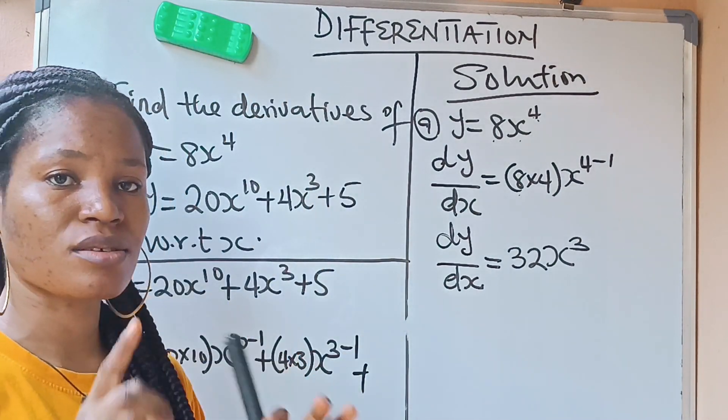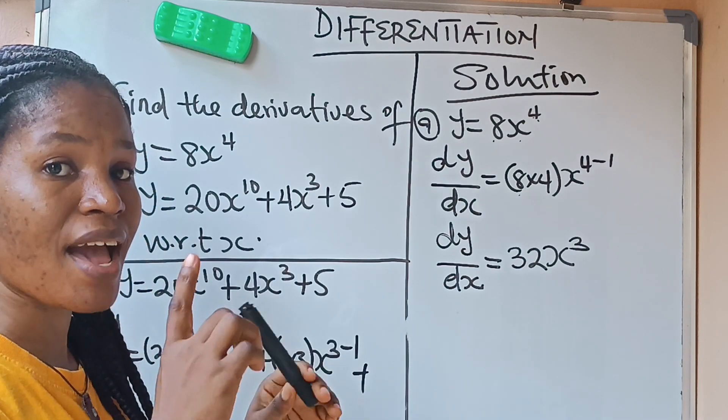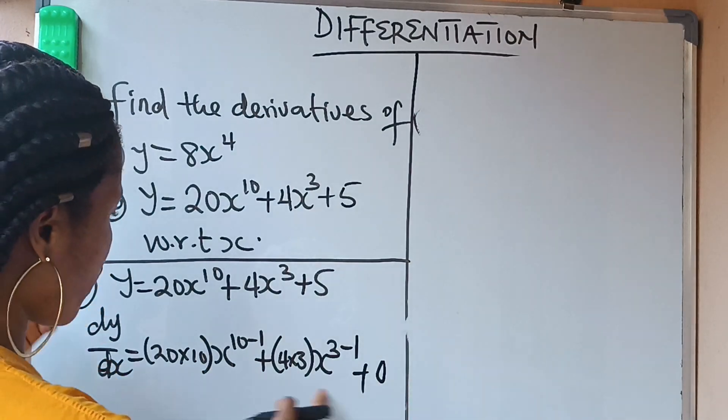So because it's just 5, when you differentiate it, you are going to get 0. The differentiation of 10 is 0. The differentiation of 1 is 0. The differentiation of 20 is 0. Once it doesn't have any x or y. So we are going to have plus 0 here. So we are going to solve this now.